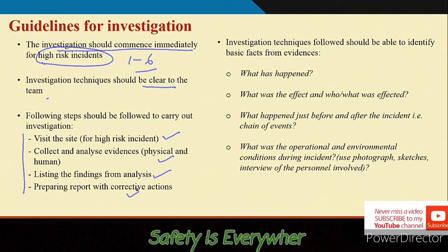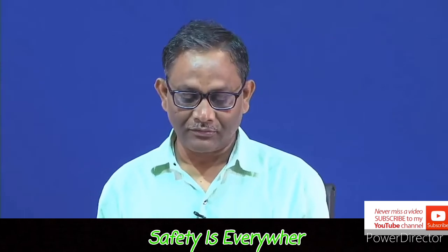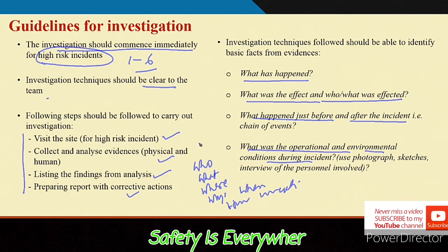The report typically contains: what happened, what was the effect and who was affected, what happened just before and after the accident, and what were the operational and environmental conditions. You want to find out who was involved, what happened, where it happened, why it happened, when it happened, and how much loss occurred. Why-why analysis will help you find out many of the root causes.